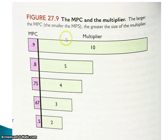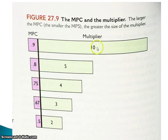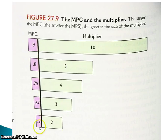Some things to remember: 1 over (1 minus MPC) gives you the multiplier, and the larger the MPC, the greater the multiplier will be. Some useful reference values — if MPS is 0.1, then 1 divided by 0.1 gives a multiplier of 10. If MPS is 0.5, then 1 divided by 0.5 gives a multiplier of 2. Since you can't use a calculator on the AP exam, you need to be able to do these yourself.